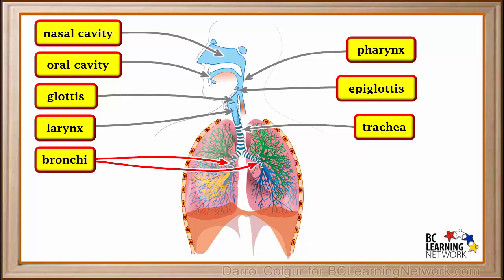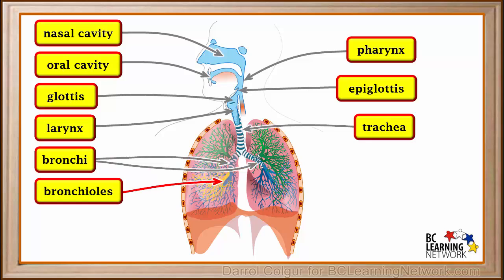The trachea branches into two tubes called bronchi. One bronchus goes to each lung. The bronchi branch into many tubes called bronchioles. As they get further from the bronchi, bronchioles get smaller and smaller. Bronchioles carry air to every part of each lung.